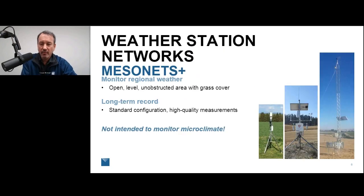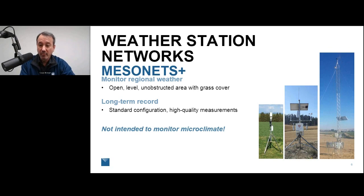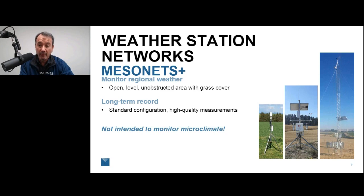Another source of data that people have traditionally used is a network of stations — like Ag WeatherNet in Washington State. Most states have some sort of mesonet, and Washington State has the largest in terms of number of stations. These are intended to monitor regional weather. The key thing about these networks is not so much the equipment — which can range from expensive towers with 10-meter wind and replicate precipitation buckets down to the ATMOS 41 that METER manufactures — but rather the location. They're intended to be regionally representative.